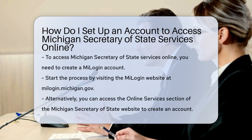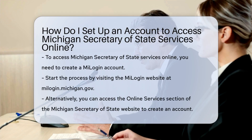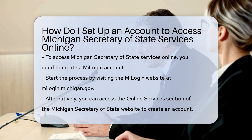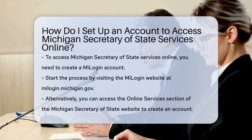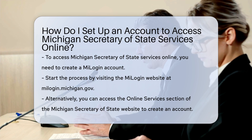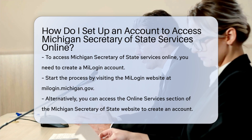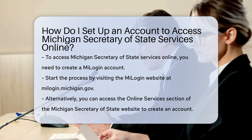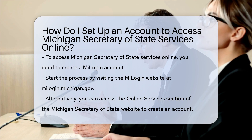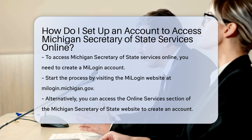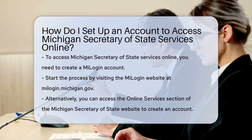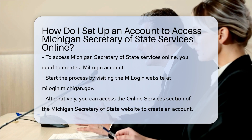To set up an account to access Michigan Secretary of State Services online, you need to create a MiLogin account. First, visit the MiLogin website. Go to mylogin.michigan.gov to start the process. You can also create an account and access Secretary of State Services by visiting the Online Services section of the Michigan Secretary of State website.